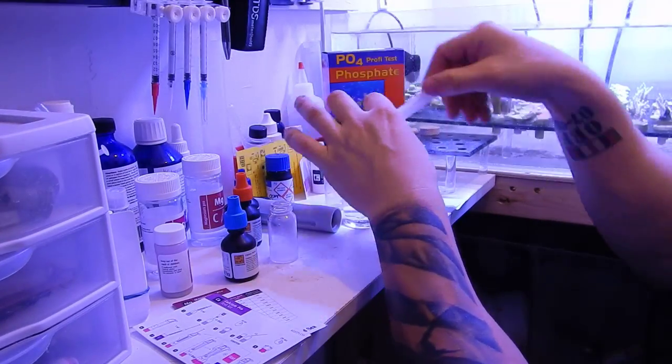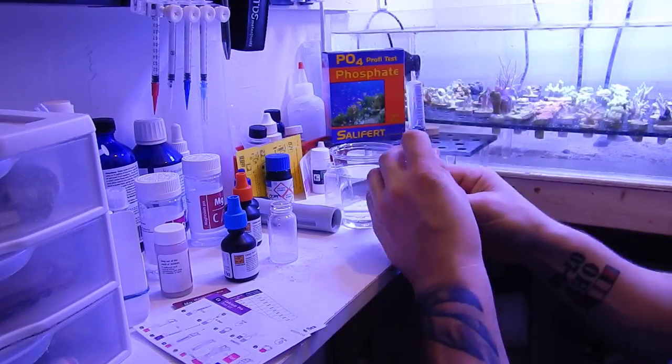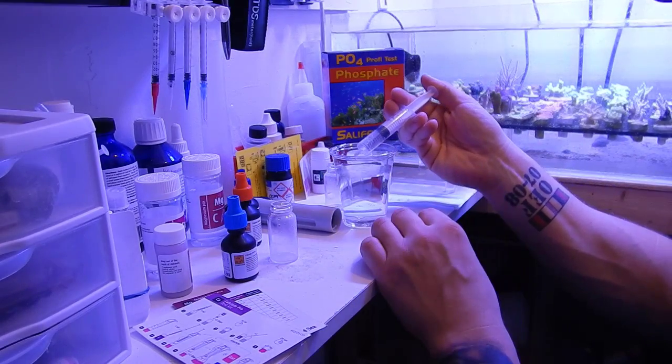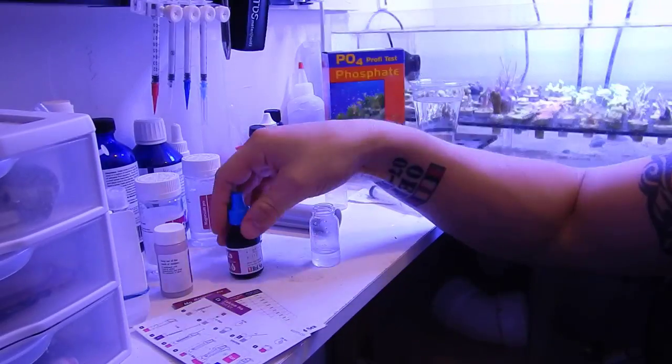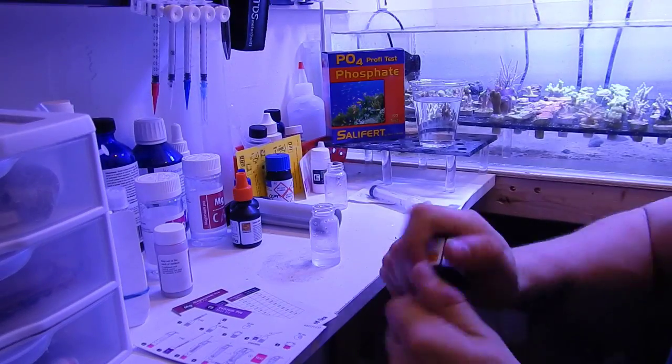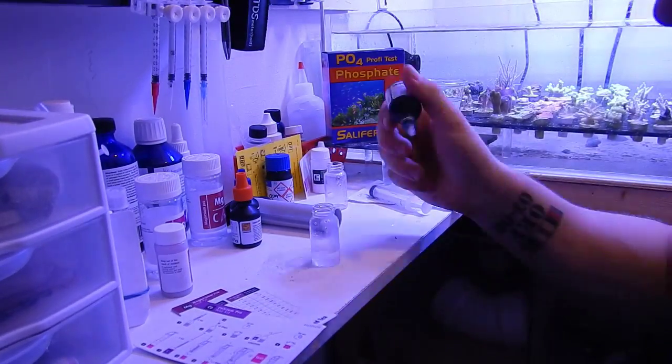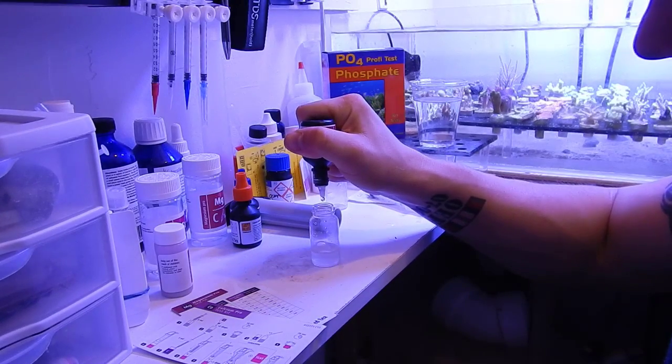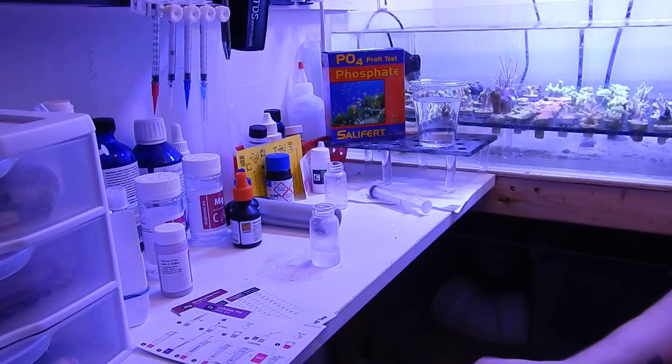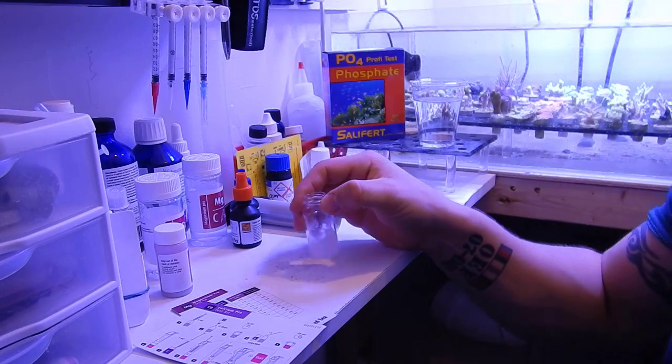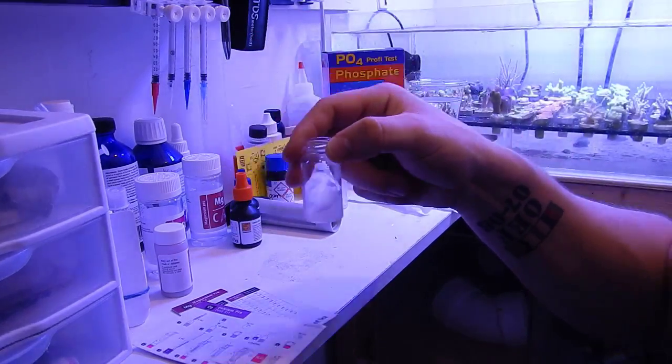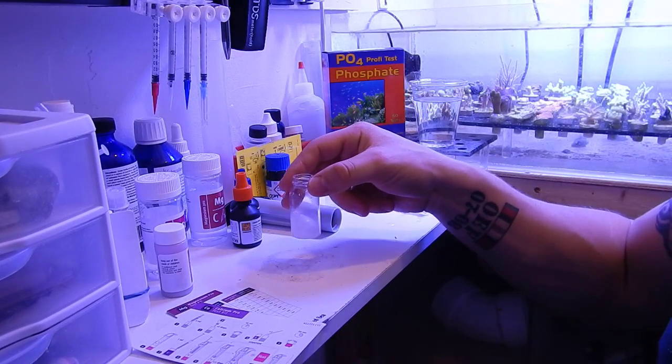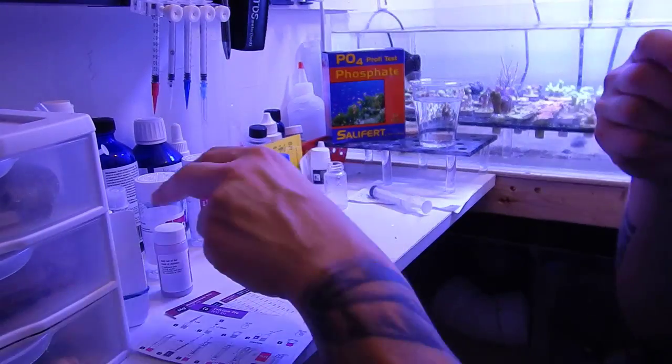Number two: now that we know what water parameters we should be testing, what should I use to test those water parameters? There are so many different test kits out there. It's going to be based on your budget, what works best for you in your current situation. I'm simply just going to answer this in a way that works best for my situation. When it comes to ammonia and nitrites, as I mentioned previously, I only test this during the cycling process, so I like to use a cheap test kit instead of buying the full API test kit.